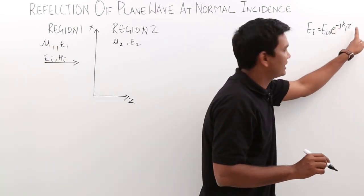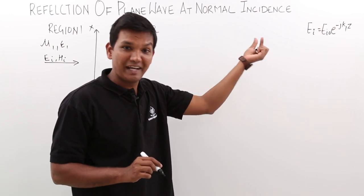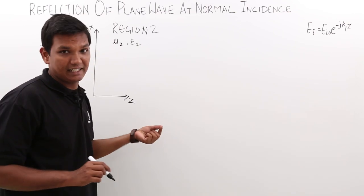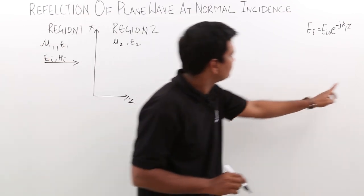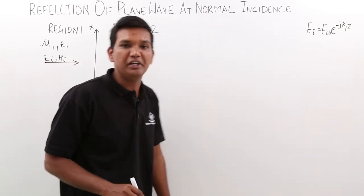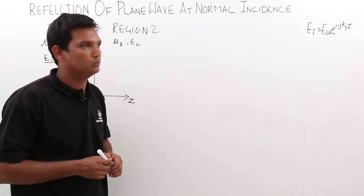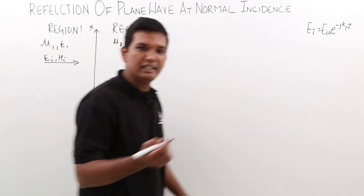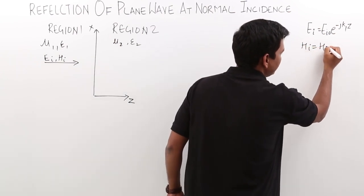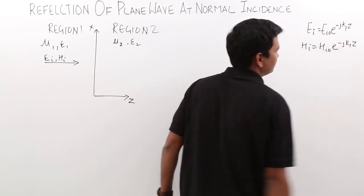Since the wave propagates in the plus z direction, we write minus j k1 z — recall from cos(ωt − βz), a minus sign means propagation in the plus z direction. Here k1 is the phase constant of medium 1, same as beta. For medium 2 we will use k2. The HI expression is HIO times e to the power minus j k1 z.